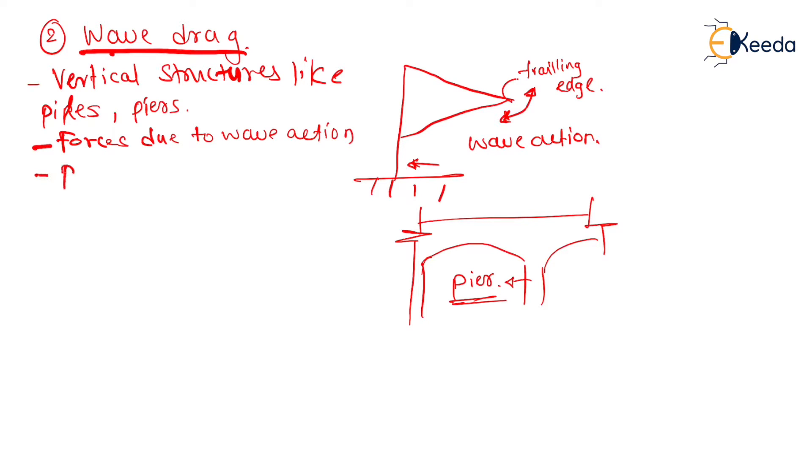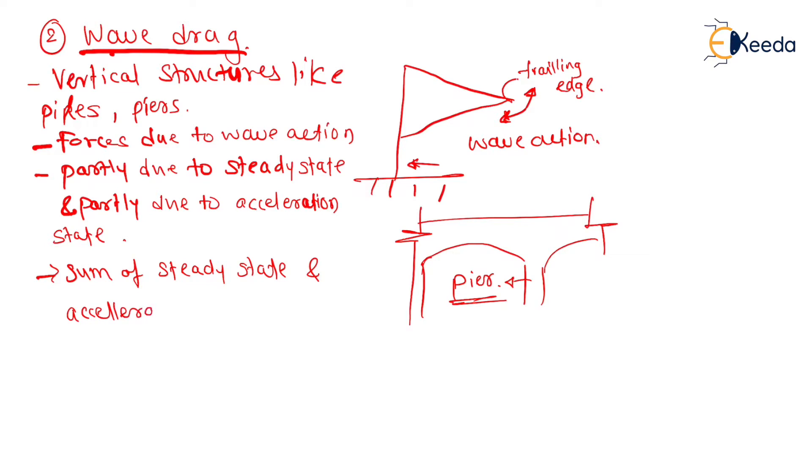These are partly due to steady state and partly due to unsteady, that is acceleration state. So this is the sum of steady state and accelerated state drag.